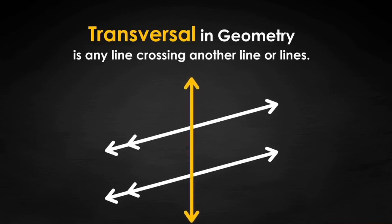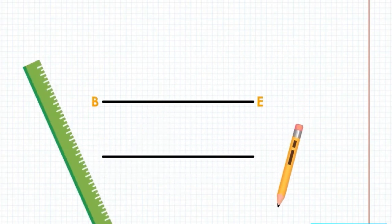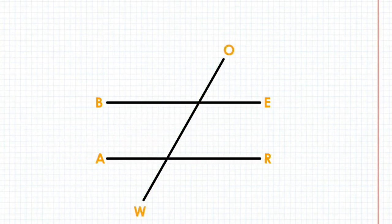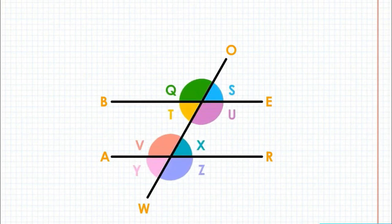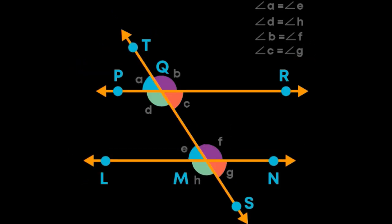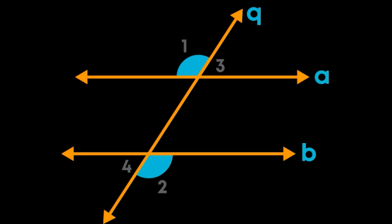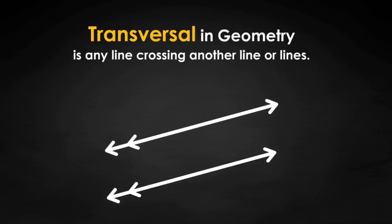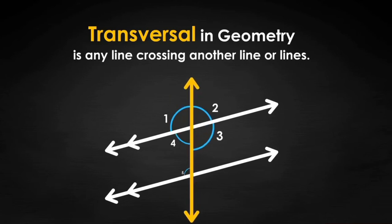A line that intersects two or more lines at distinct points is called a transversal line. When a transversal cuts two parallel lines: vertically opposite angles are equal, corresponding angles are equal, alternative interior angles are equal, and co-interior angles (also called co-interior or same-side interior angles) add up to 180 degrees.